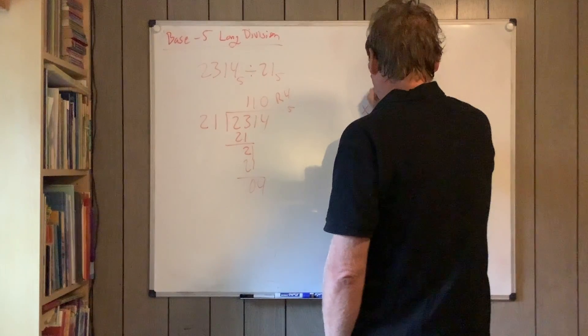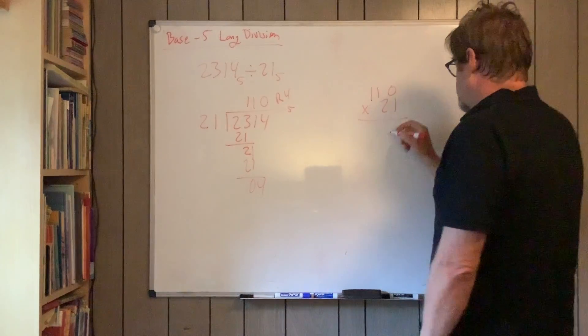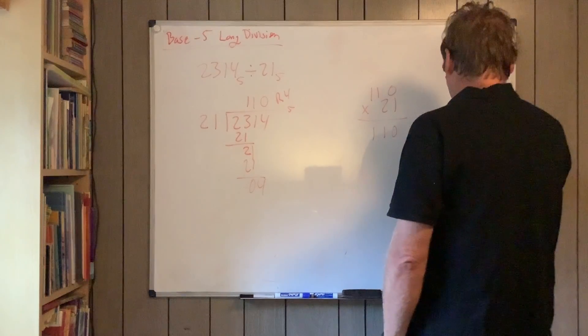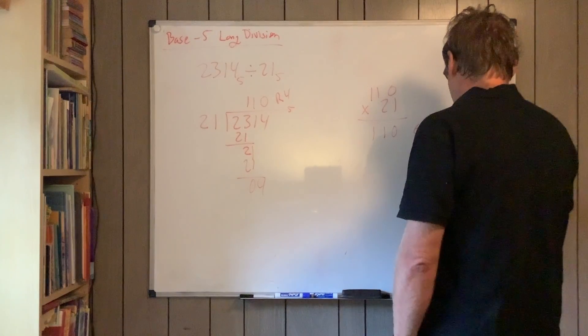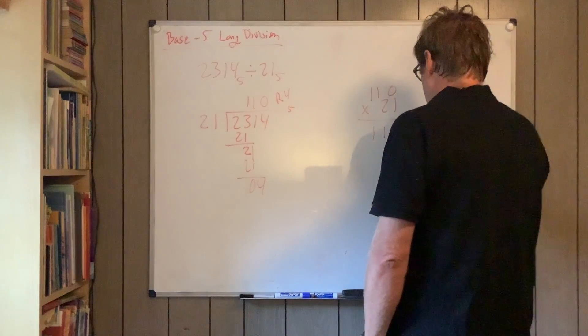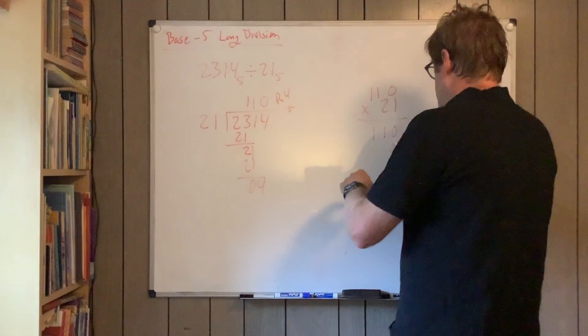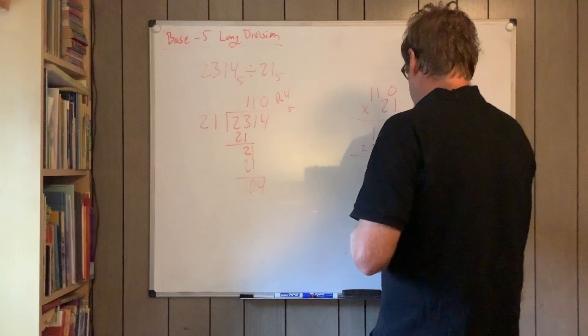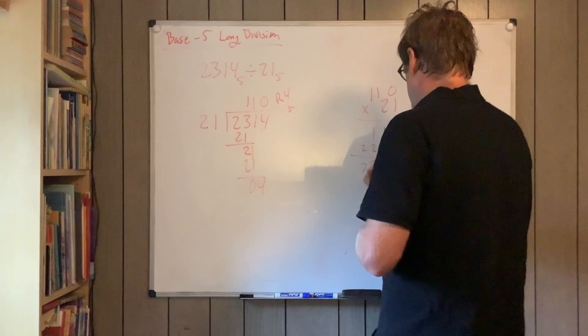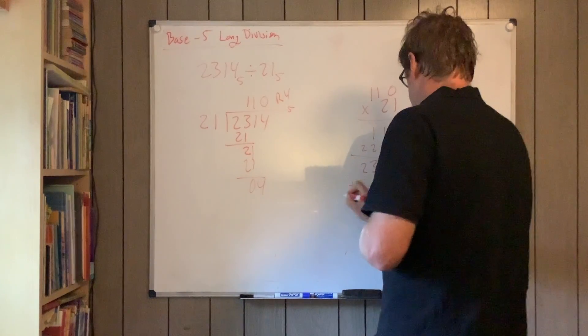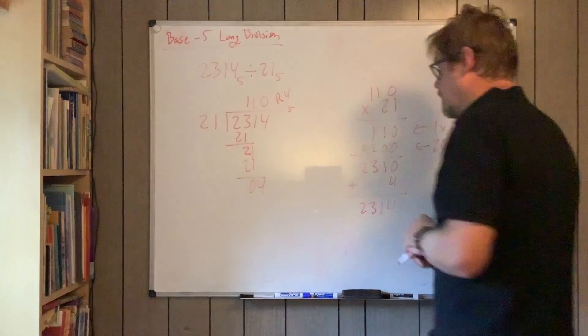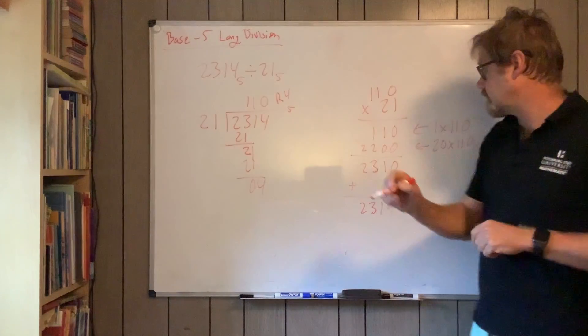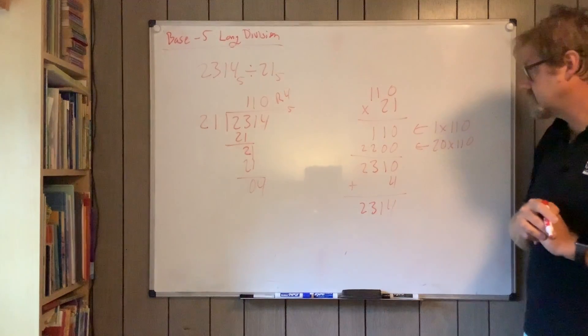And then let's just do this again. 1 times 110. And then 20 times 110. Don't forget to add the remainder to double check, and we get what we started with. So that's right.